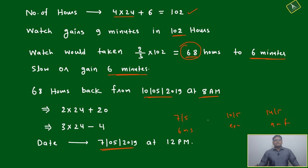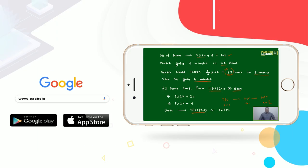Only thing, question has given in a little complicated way - this data is given, they are asking. Then 68 hours back from 10/5/2019 at 8 AM, it will be 12 PM of 7th May 2019.